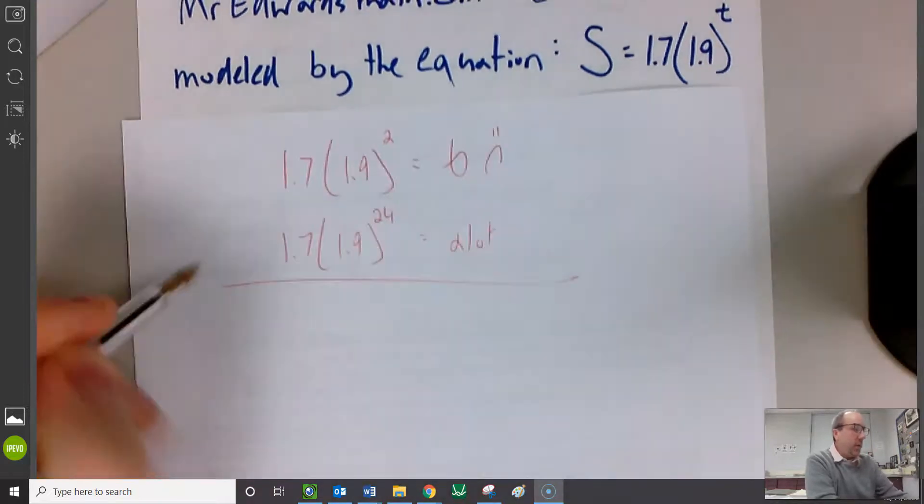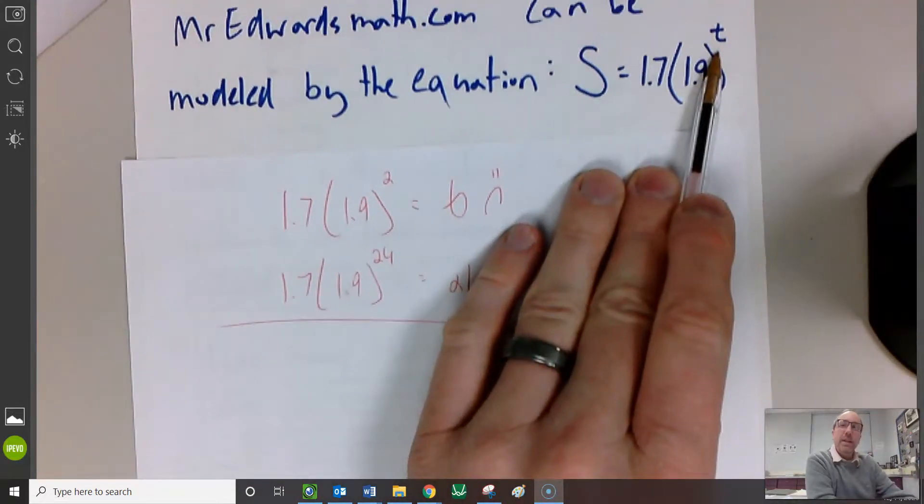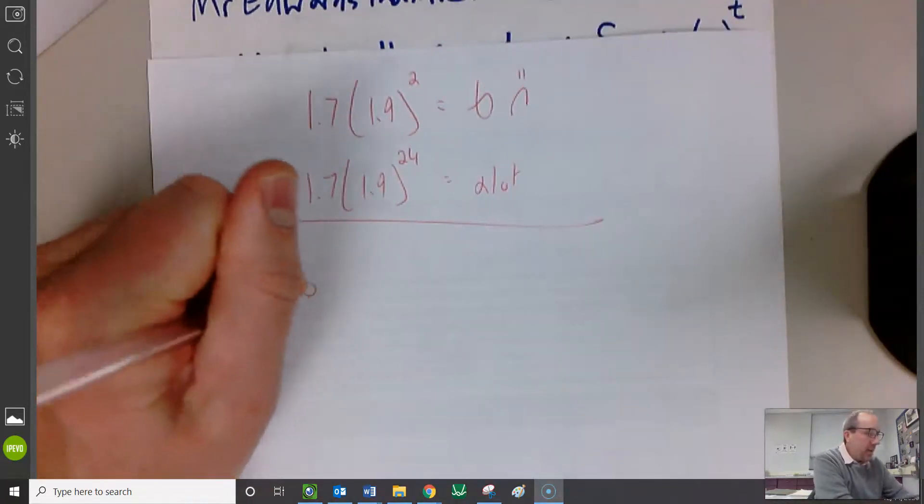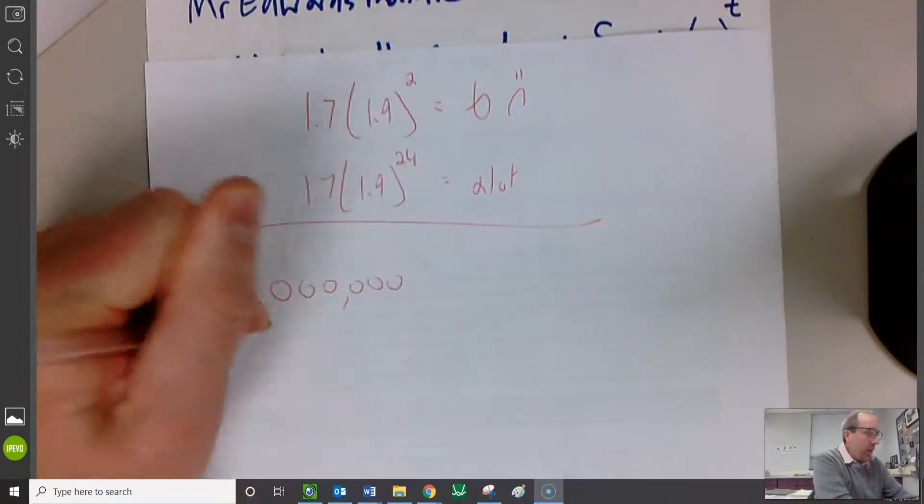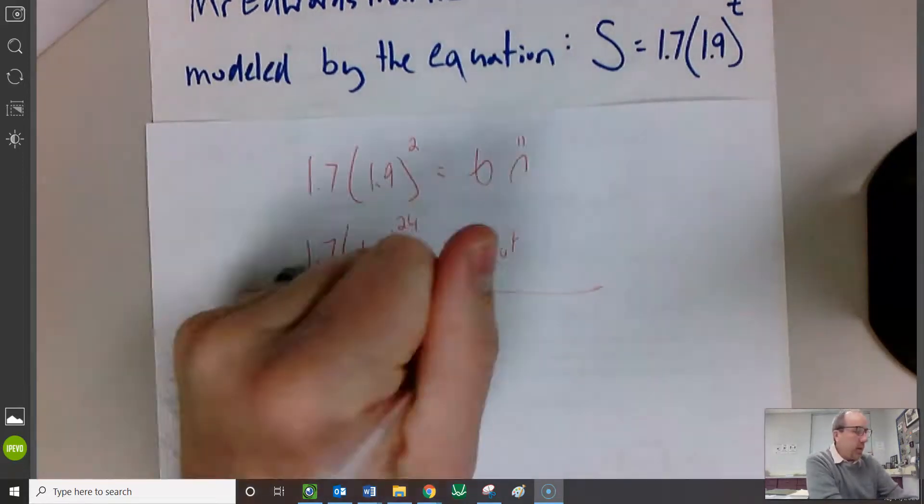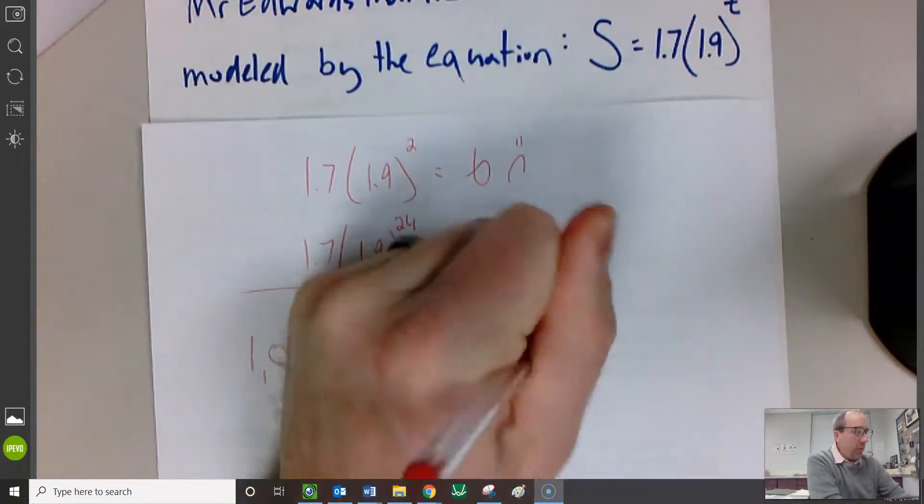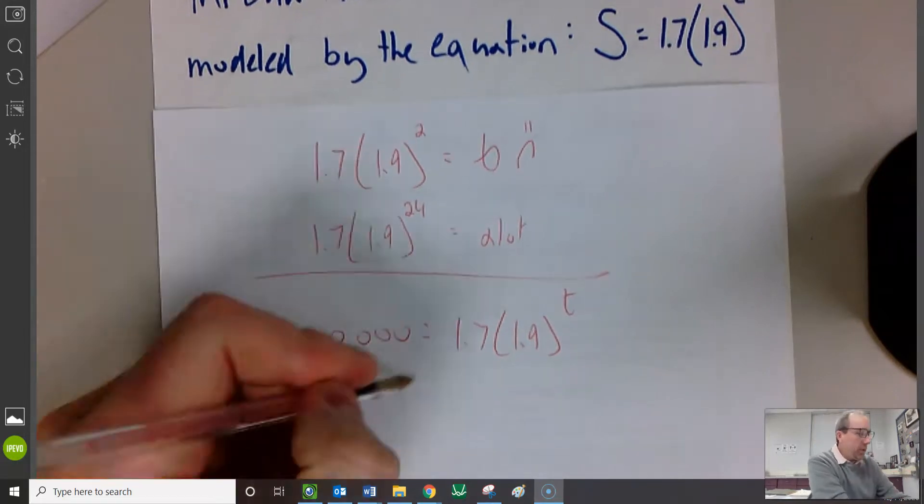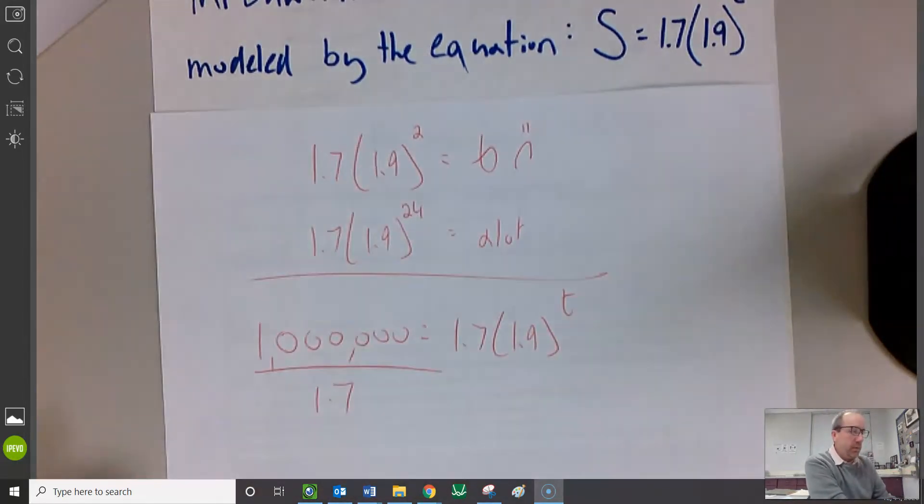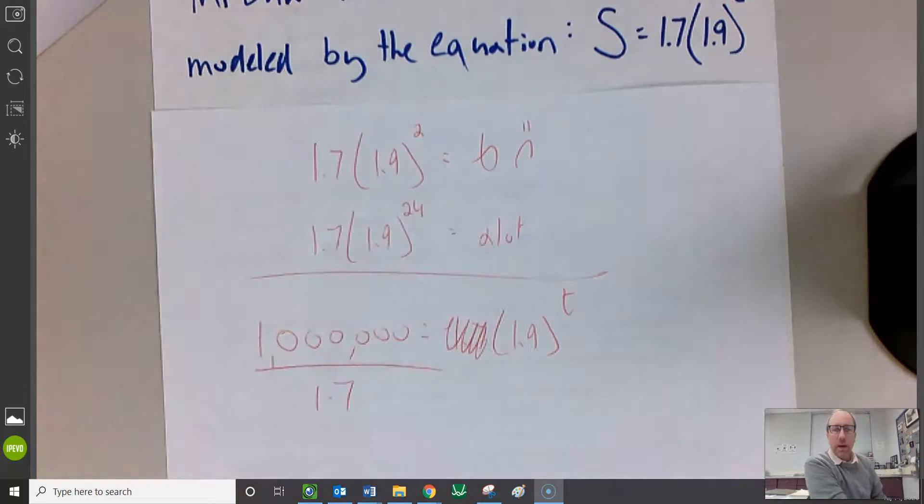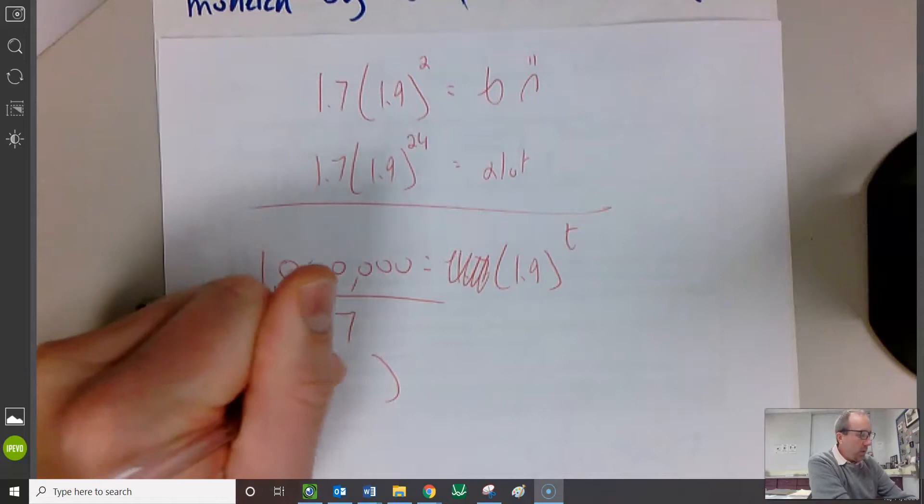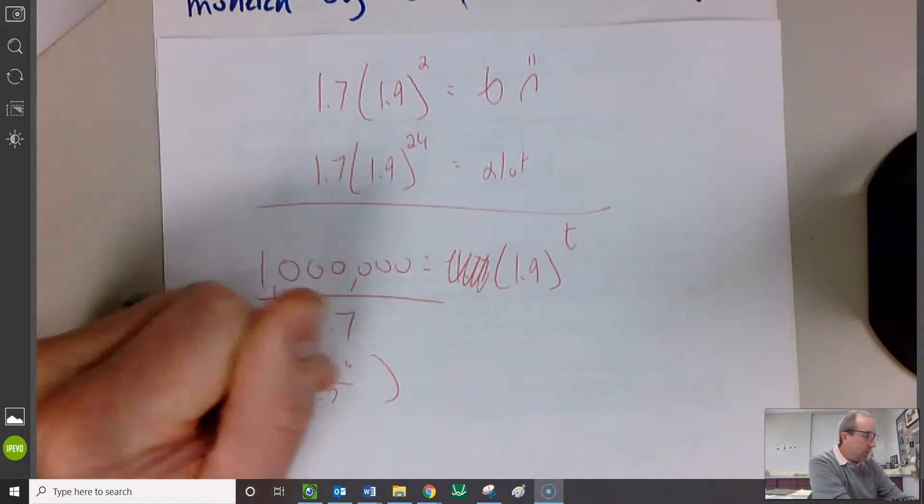And then finally, the last one. How many months would it take? What does T have to be so that I get a million subscribers? I'm just going to take subscribers out and replace it with a million. 1,000,000 = 1.7 times 1.9 to the T. This is the type of thing we just got done taking a quiz on. You guys are going to take a quiz on here in about two hours. First, I'm going to divide by 1.7.